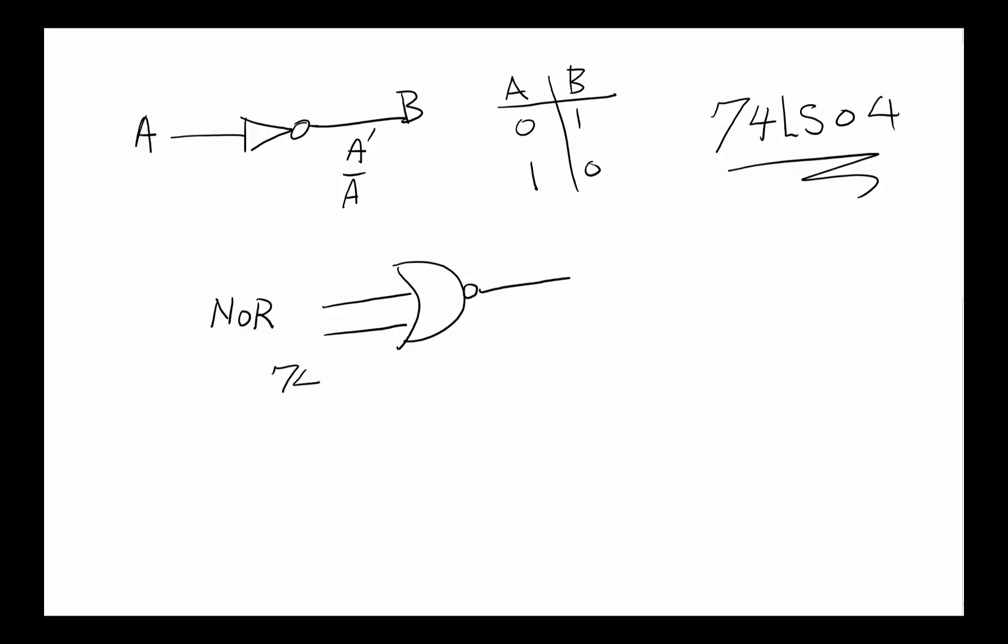This particular one is 74NS02. The truth table for it is A, B, and C: 0-0 gives 1, 0-1 gives 0, 1-0 gives 0, 1-1 gives 0. This is NOT OR, so it's going to be 1 here and 0 everywhere else.